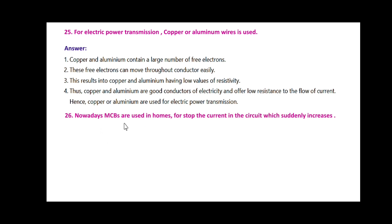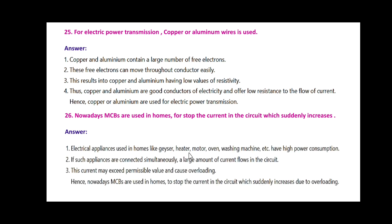Nowadays, MCBs are used in homes to stop the current in the circuit which suddenly increases. Electrical appliances used in homes like geysers, heaters, motors, ovens, and washing machines have high power consumption. If such appliances are connected simultaneously, a large amount of current flows in the circuit. This current may exceed the permissible value and cause overloading. Hence, nowadays MCBs — miniature circuit breakers — are used in homes to stop the current in the circuit which suddenly increases due to overloading.